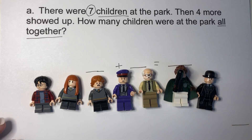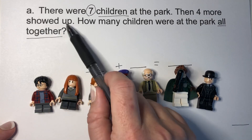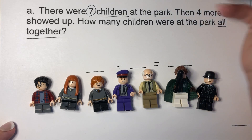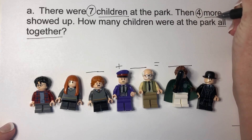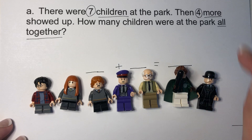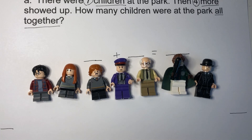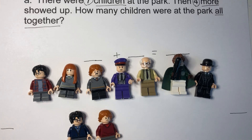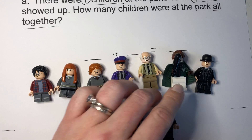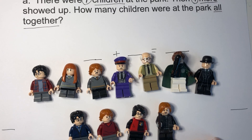Now let's see what we need to do. Then four more showed up. What number could I circle? Four. That's right. Four more showed up. When we get more, we add to what we already have. So let's add four more to the seven that we already have. Let's add four more — one, two, three, four. Let me go ahead and take that knife away from you, Ron Weasley. So we have four more that we added to our seven.